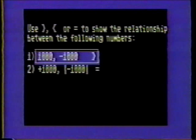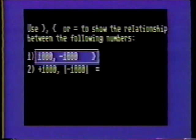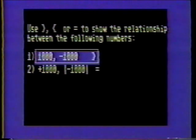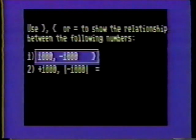Number one: 1,000 and negative 1,000. Remember, no sign preceding a number indicates a positive number, and numbers located on the left side of zero are less than numbers located on the right side of zero. Since 1,000 is located on the right side of zero on the number line, it is greater than negative 1,000, which is located on the left side of zero.